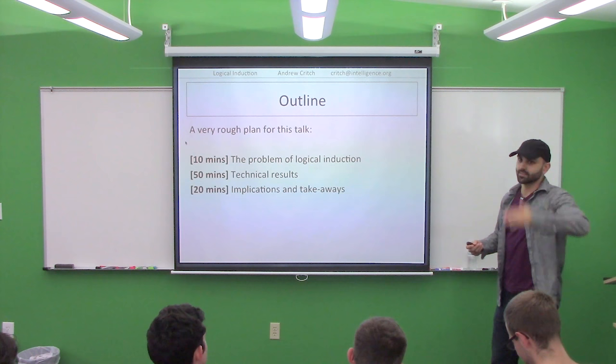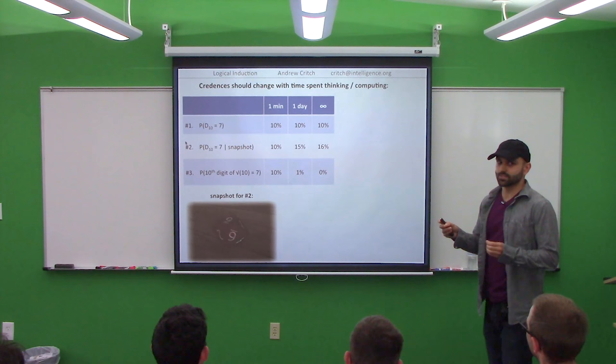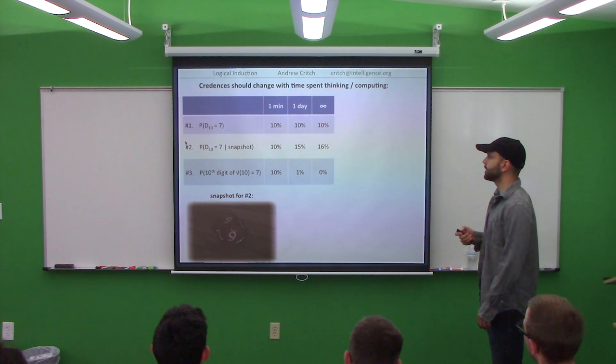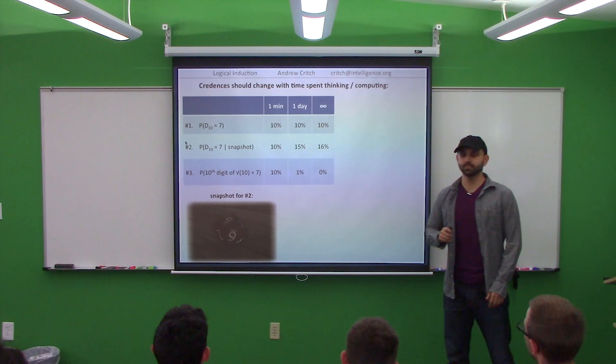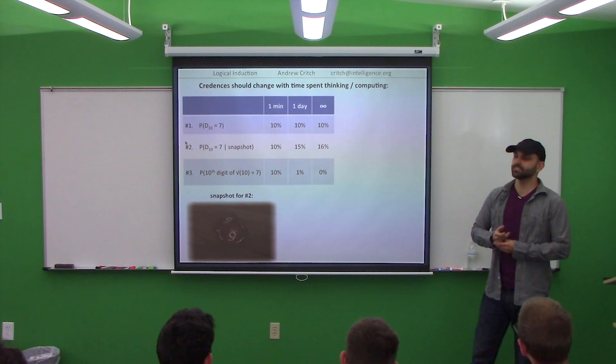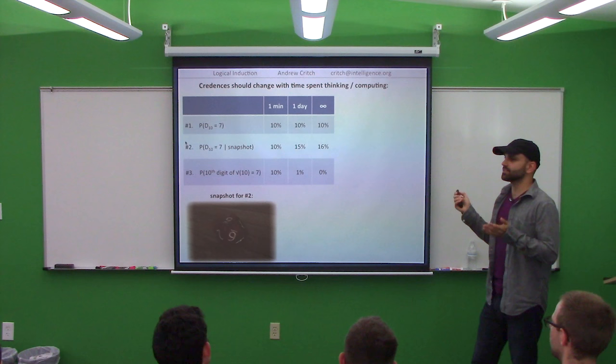I'm going to give you a few examples of different kinds of uncertainty — some of which are logical uncertainty, some of which aren't, and some of which are a mixture. Consider a roll of a 10-sided die, a D10. If I ask you what is the probability that that die roll lands a 7, you'll say 10%. And if I let you think longer about it, no matter how long — even forever — you'll still say 10%.